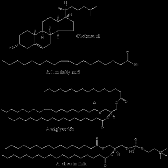In 1815, Henry Braconet classified lipids in two categories: solid greases or tallow and fluid oils. In 1823, Michel-Eugène Chevreul developed a more detailed classification, including oils, greases, tallow, waxes, resins, balsams and volatile oils or essential oils.